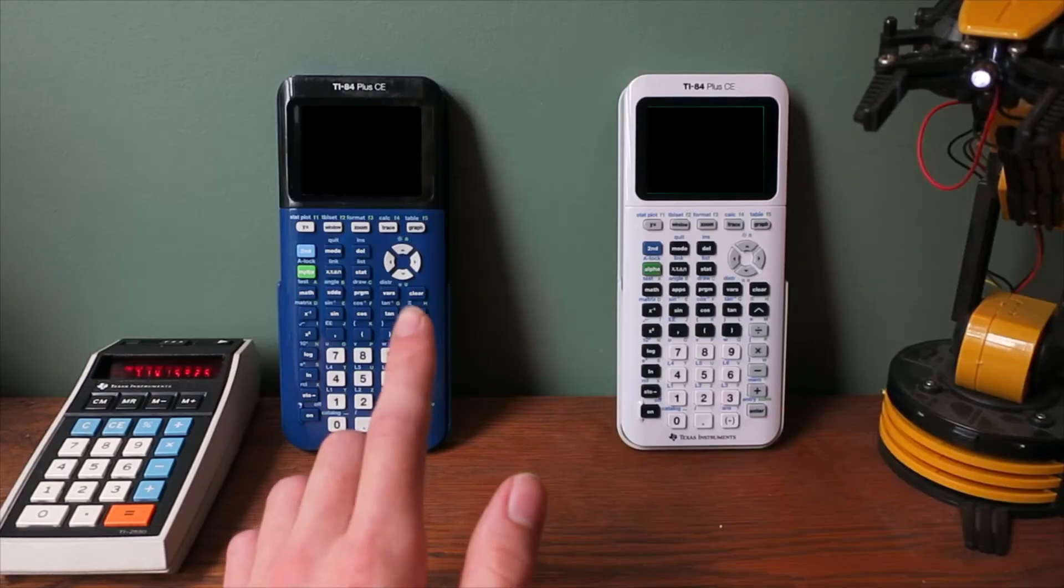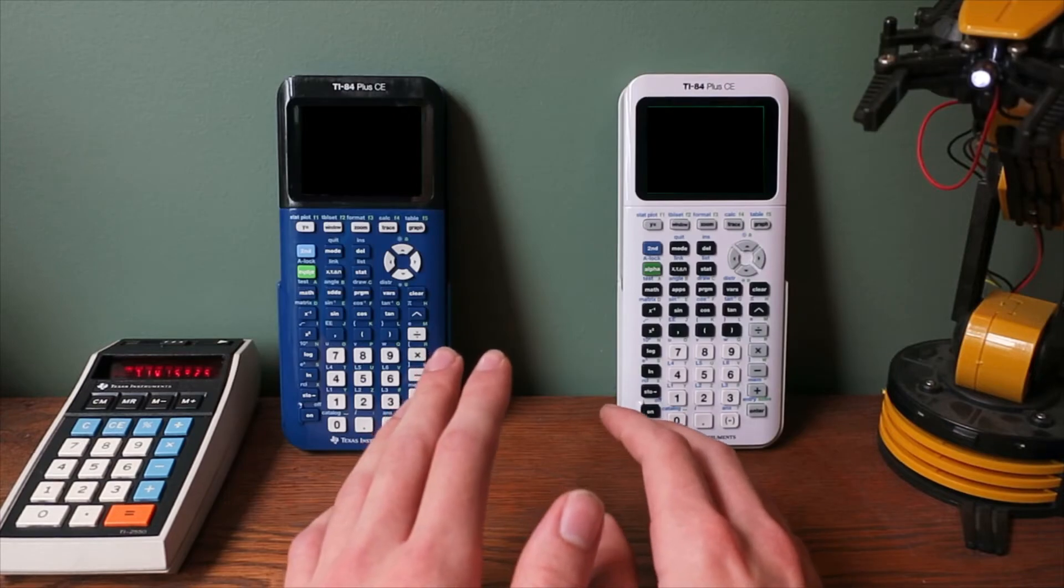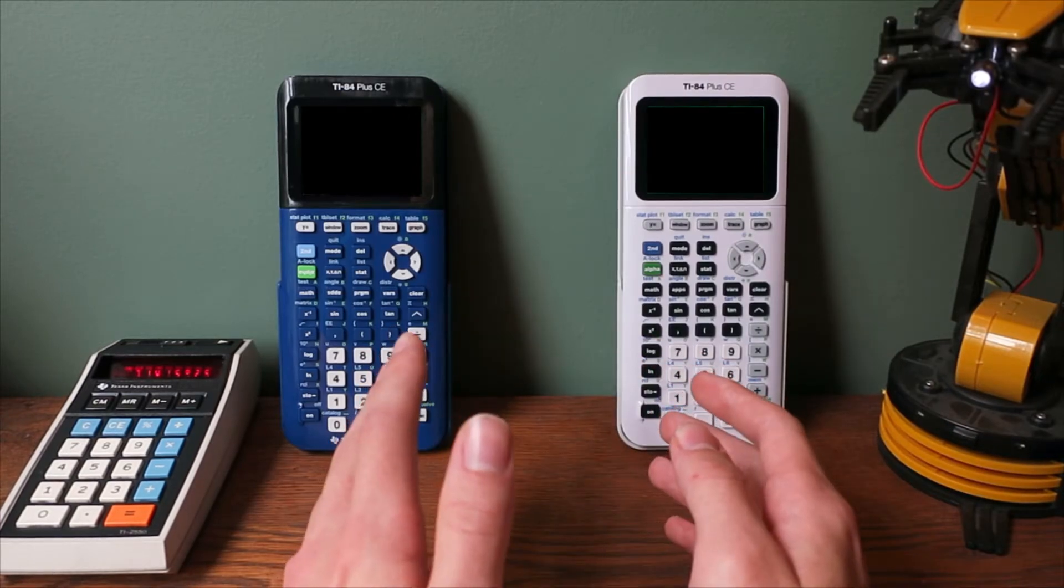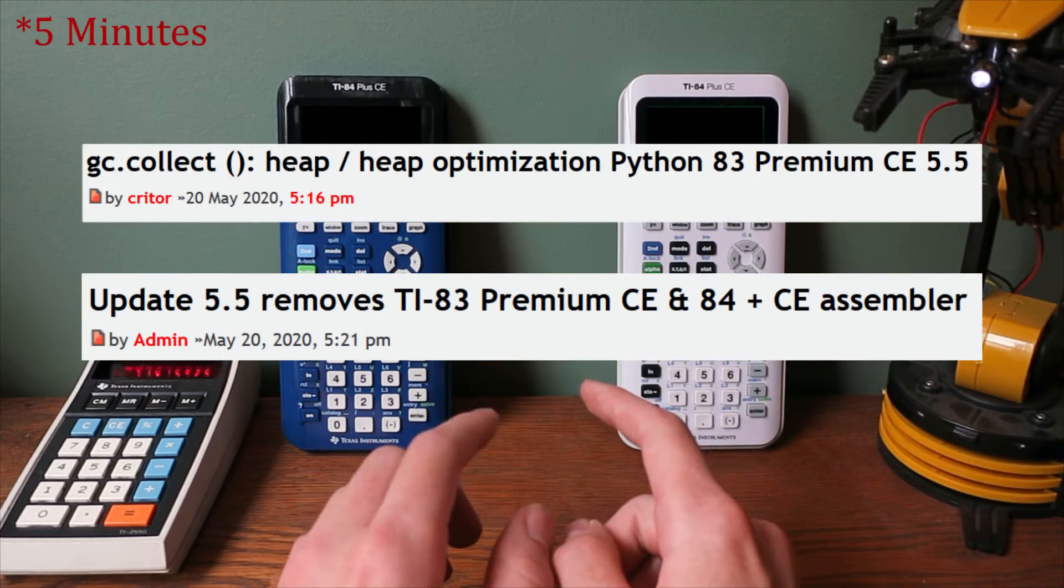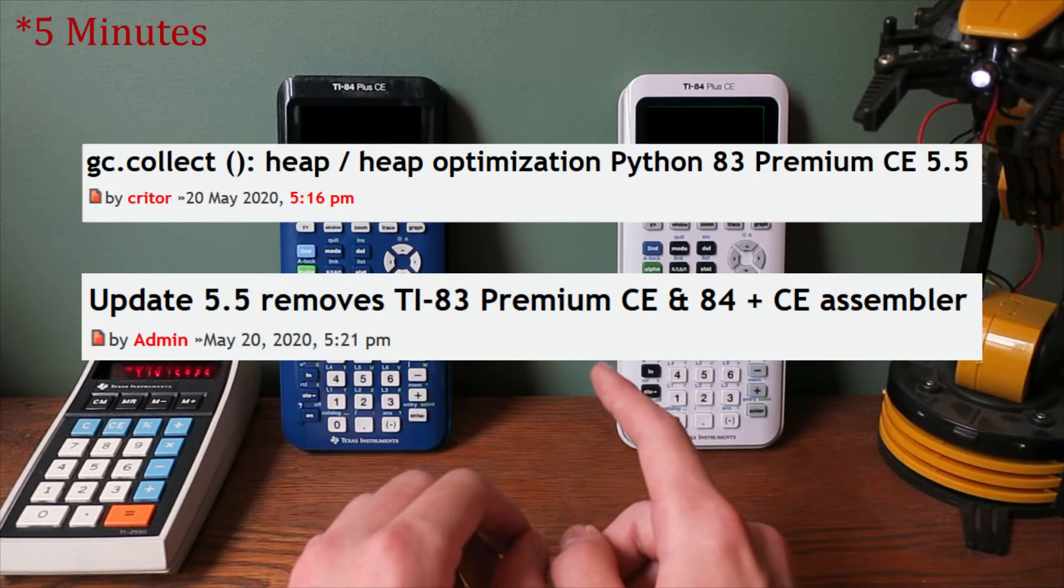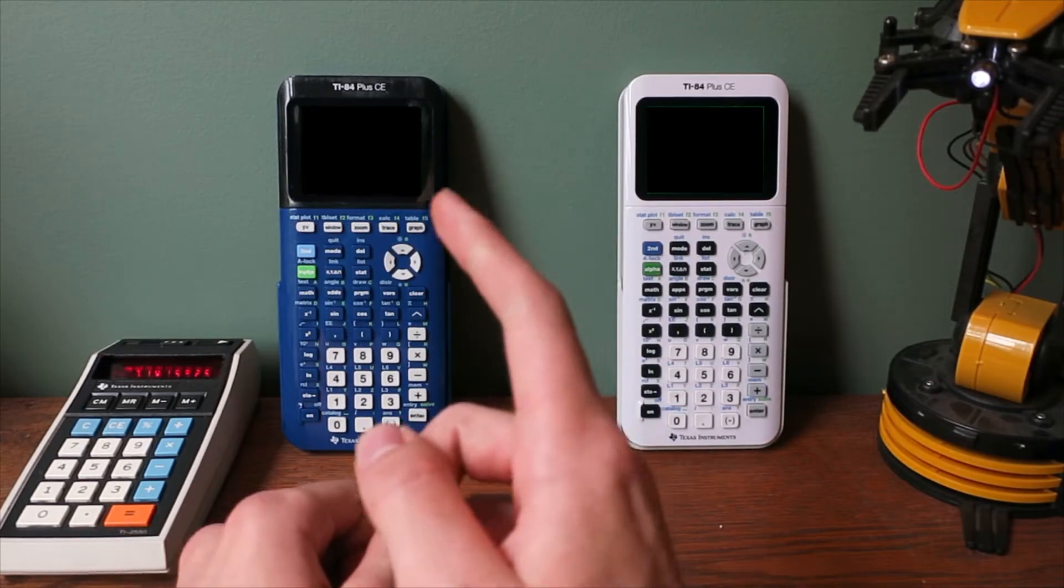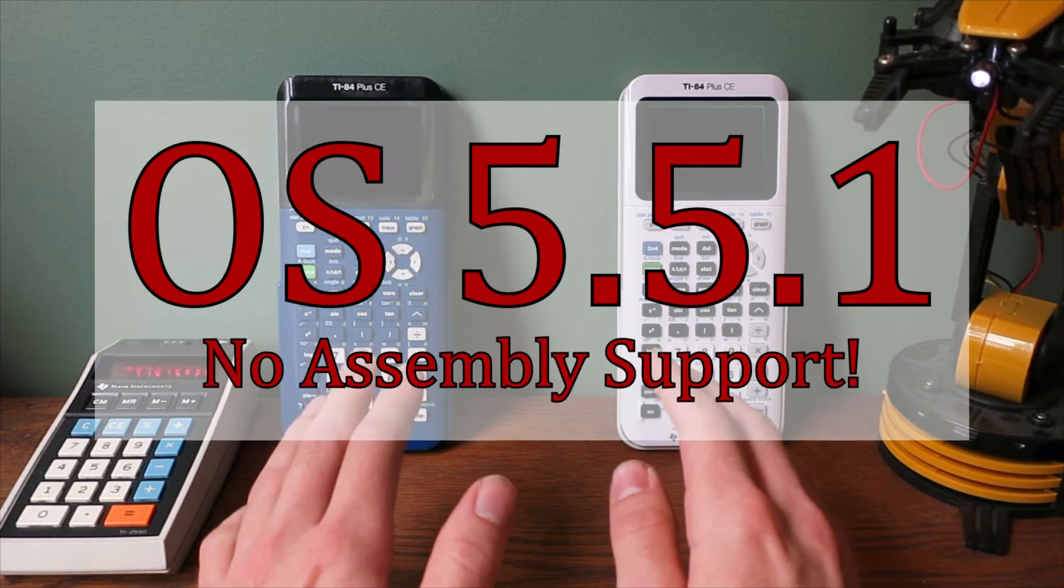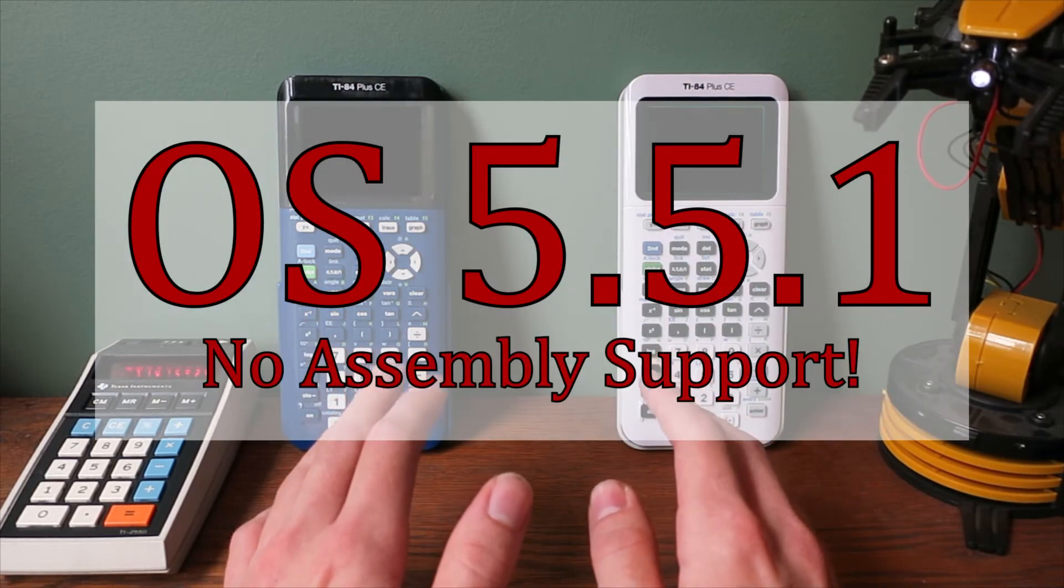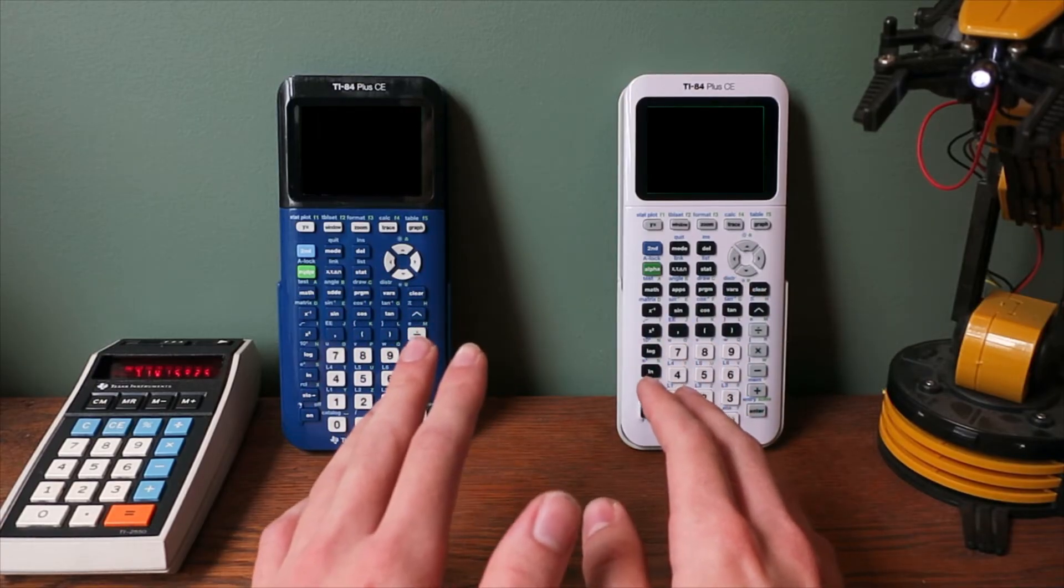On May 20th, TI Planet published their latest article about a beta version of TI's next supposed OS, OS 5.5.0. However, nobody had any idea of what a dirty trick TI was about to pull. Near hours after TI Planet's last article, TI pulled the rug from under the community's feet, and instead of releasing 5.5.0, they released 5.5.1, which removed all assembly support. Okay, a lot happened in a very short period of time here, so let me slow down and try and condense it all.